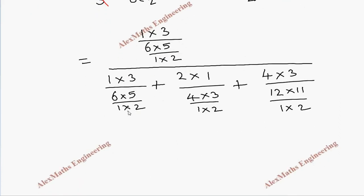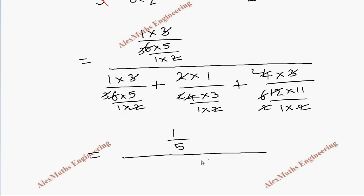After cancelling common factors across numerators and denominators, the numerator simplifies to 1/5. The denominator becomes 1/5 + 1/3 + 2/11. We now need to take LCM to add these fractions.